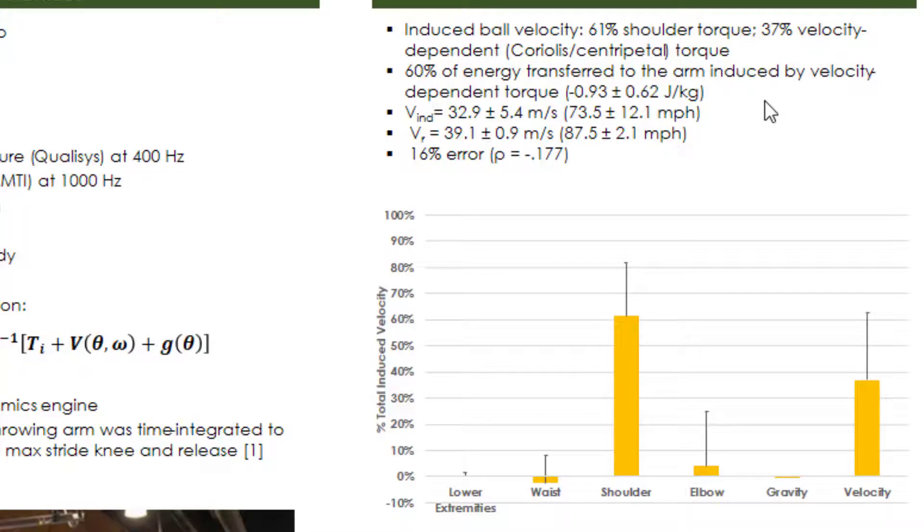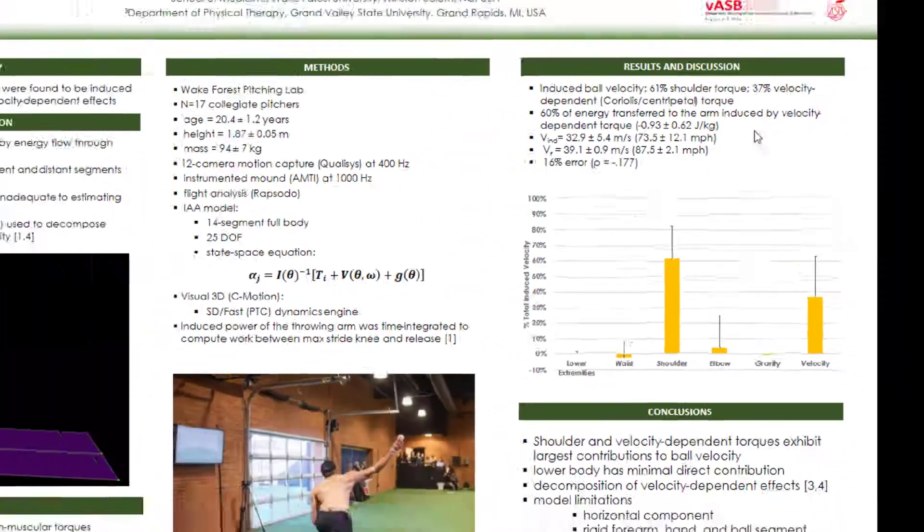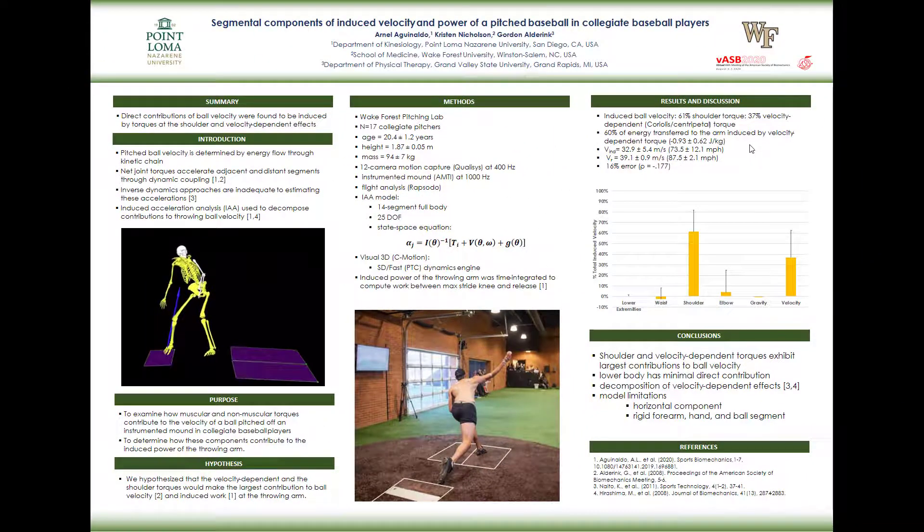Mainly, the forearm and hand and ball segment was all defined as one rigid segment when in reality the ball most likely moves relative to the actual hand. So future studies should address that definition and perhaps use a more defined distal arm segment in order to understand that interaction there.